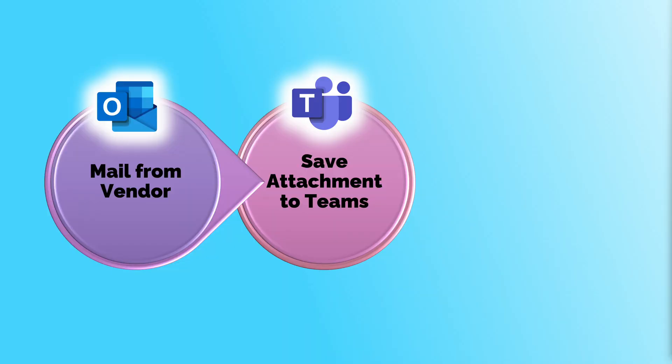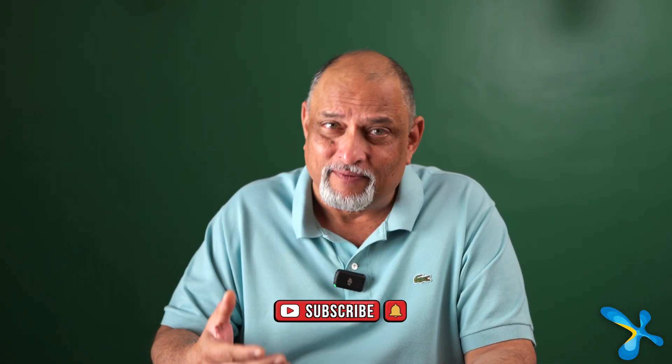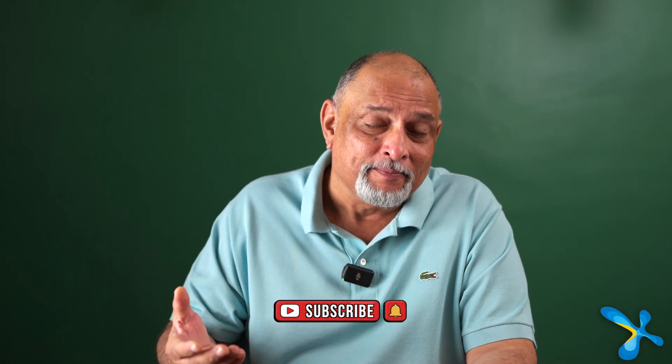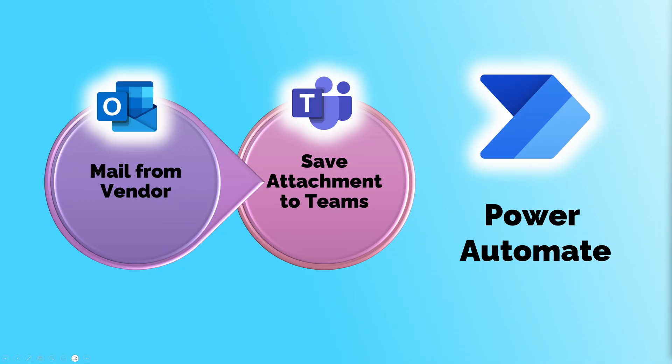One more word of caution: Outlook rules work only within Outlook. But sometimes we want automation outside Outlook. For example, I get a mail with an attachment — it's a quotation from a vendor — and I want to detach that file and put it on OneDrive or Teams. You cannot do that using Outlook rules. For that, you have to use Power Automate. But that is a topic for another video.